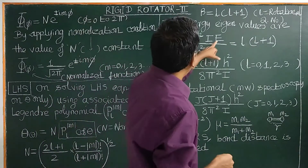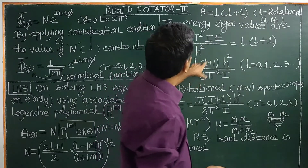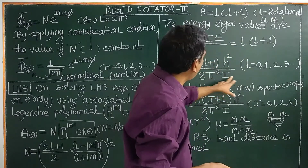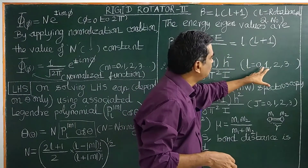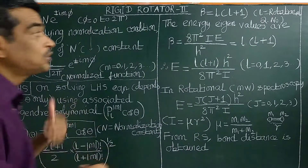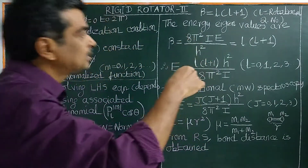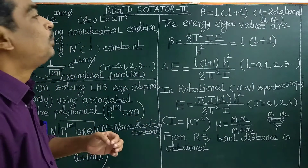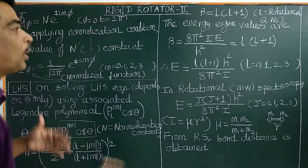Rearranging the equation, E equals L(L+1) H squared divided by 8 pi squared I, where L equals 0, 1, 2, 3 — the rotational quantum number. The rotational energy levels are quantized. I have discussed this in another video with a link provided — please watch the video lesson about rotational spectroscopic problems.